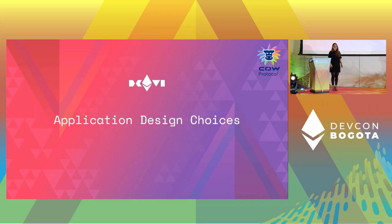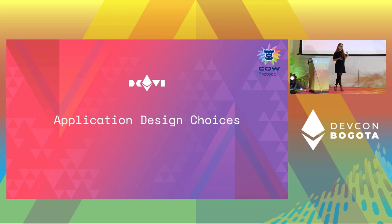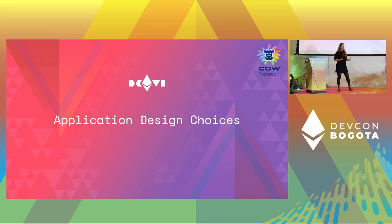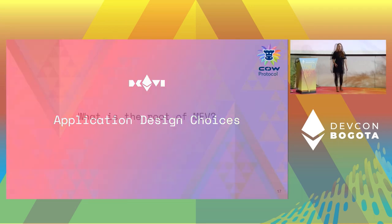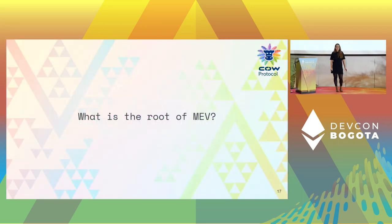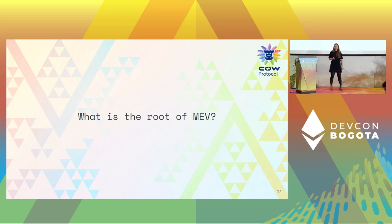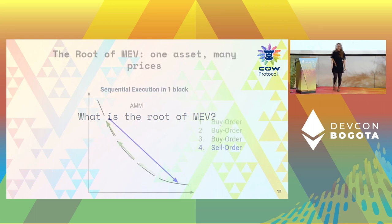This leads to the next part of the talk: how can we design applications that don't expose MEV? To do that we first need to understand where MEV is actually coming from — we need to understand the source in order to avoid it.